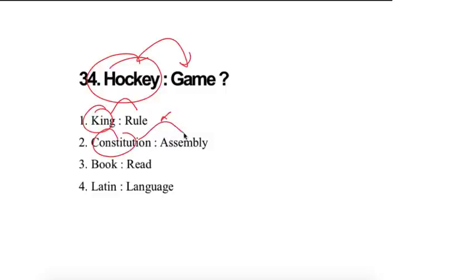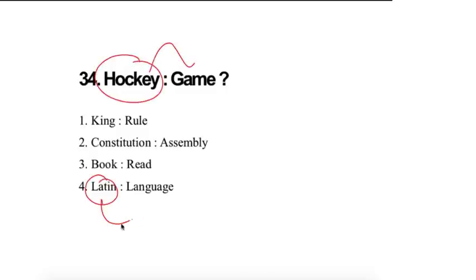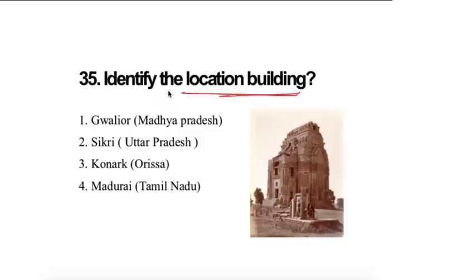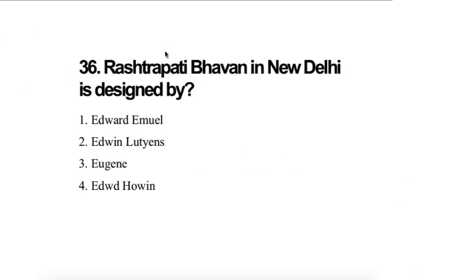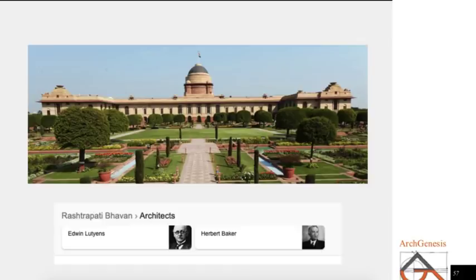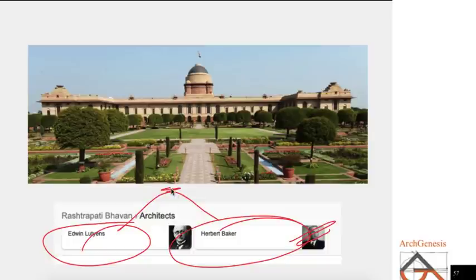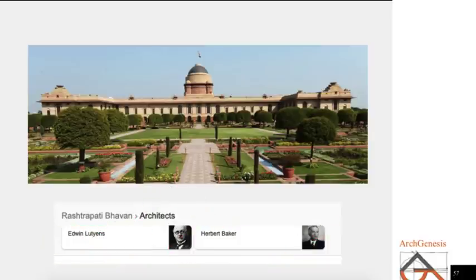Hockey is a game, so king is a ruler, no. Constitution is assembly, no. Book and read, no. Latin will be the language. So just like hockey is a game, Latin is a language. Identify the location of this building. It is in Gwalior and the name of this building is Teli Ka Mandir. Rashtrapati Bhavan in New Delhi is designed by Edwin Lutyens and Herbert Baker, both. Two names, both of these names are very important. But if both names are given, you have to give preference to Edwin Lutyens.